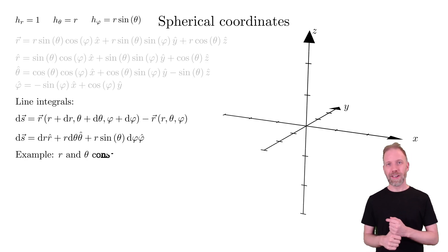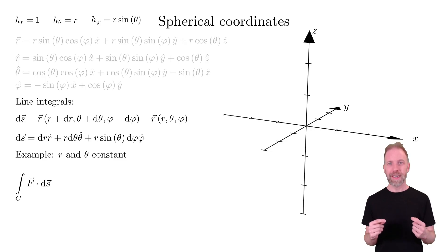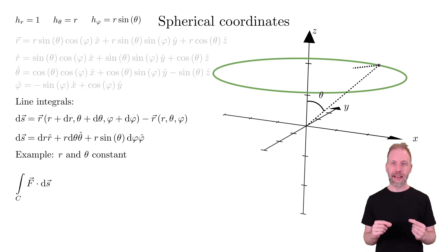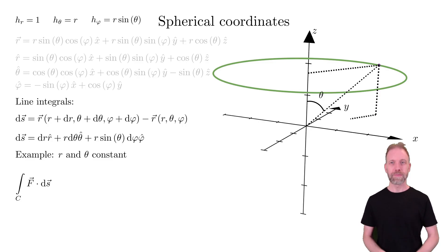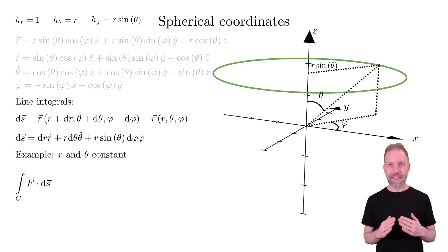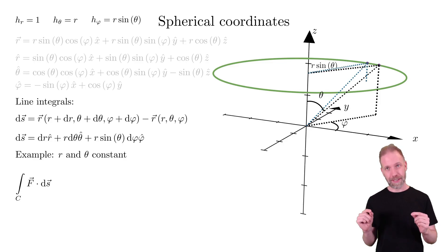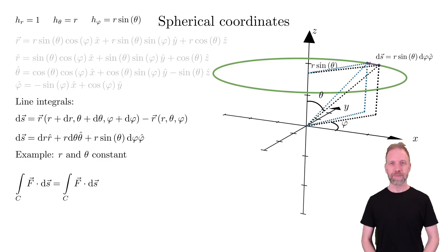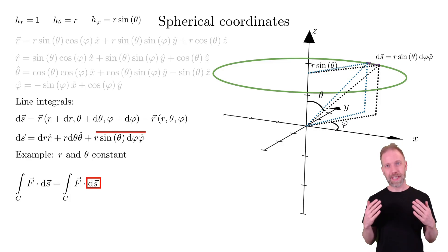Finally, our last case will be when r and theta are constant. We still integrate the vector field in the phi direction. We can add one point and define the angles theta and phi for this point. Note that the distance to the z-axis is r sin(theta). Then we make a small step in phi. Our DS is now r sin(theta) d-phi phi-hat, which is what we would insert into the integral.